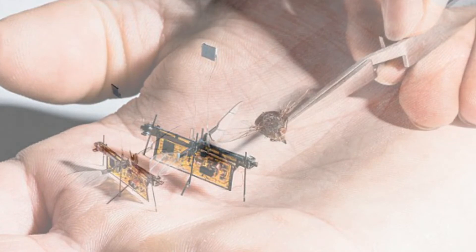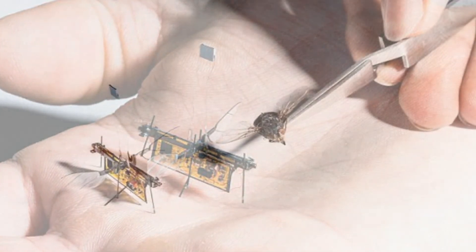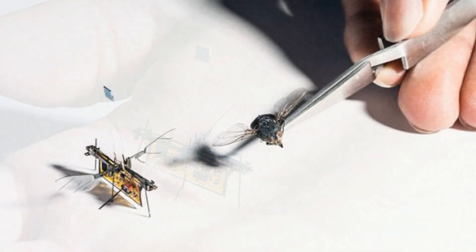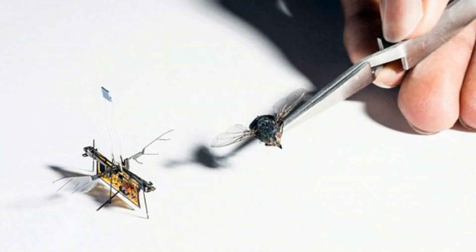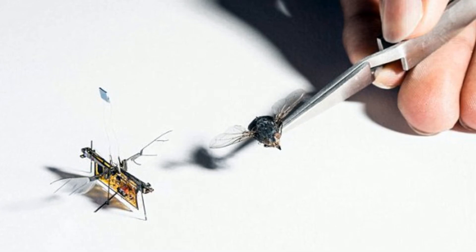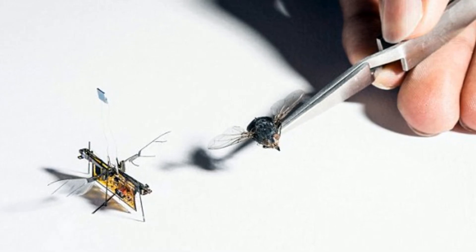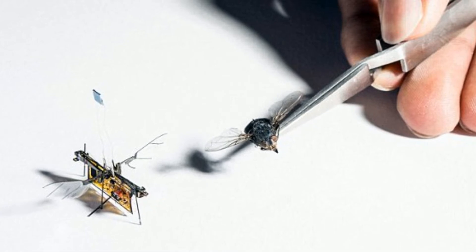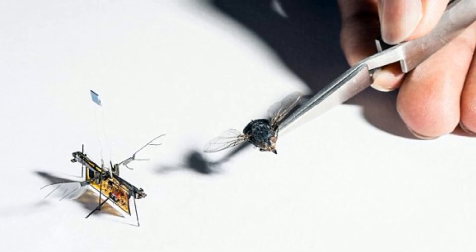Before now, the concept of wireless insect-sized flying robots was science fiction. 'Would we ever be able to make them work without needing a wire?' said Sawyer Fuller, an assistant professor in the UW Department of Mechanical Engineering. 'Our new wireless RoboFly shows they're much closer to real life.'